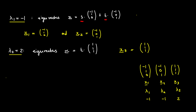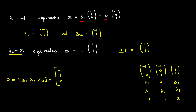The diagonalization is given by P equal to the matrix whose columns are x1, x2, x3 — that is, [-1, -1, 1; 1, 0, 1; 0, 1, 1]. And the matrix D is just the diagonal matrix formed by putting the corresponding eigenvalues along the main diagonal: D = diag(-1, -1, 2), with zeros everywhere else.